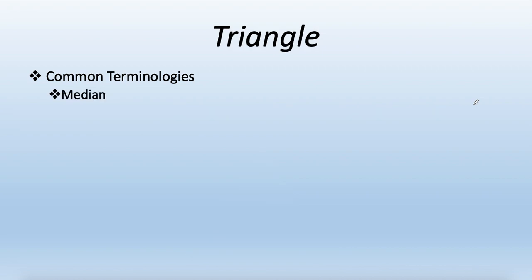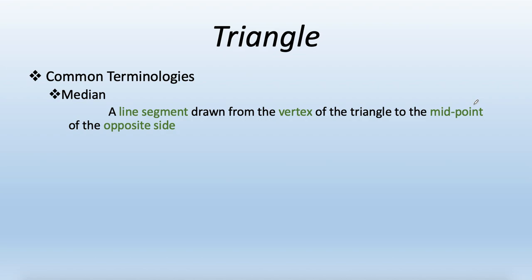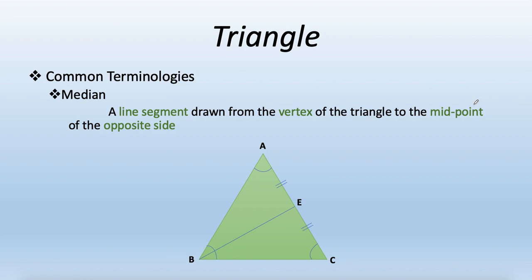The next term is median. A median is a line segment drawn from the vertex of a triangle to the midpoint of the opposite side — it bisects the side. If I draw a median from vertex A to side BC, it bisects BC into two equal parts BD and CD. Likewise, a median from B gives AE equal to EC, and from C gives AF equal to BF.